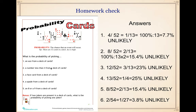The next one: a face card from a deck of cards. Now there are twelve face cards. So we put twelve over fifty-two, or three over thirteen, and we get twenty-three percent, which is still unlikely.